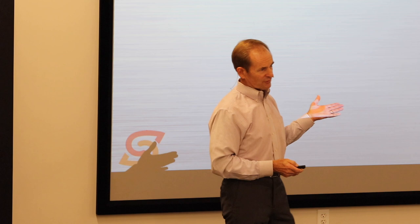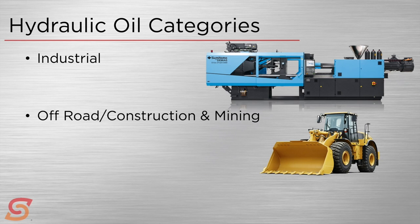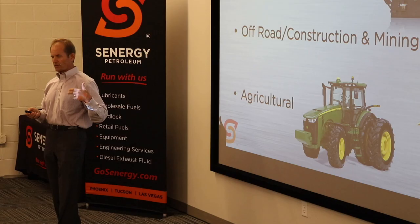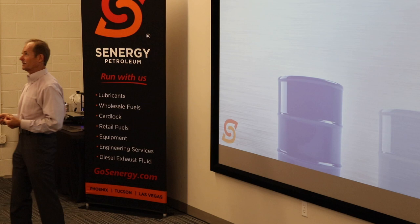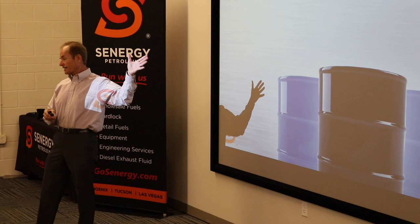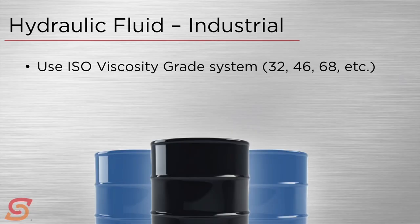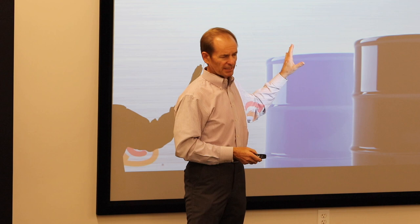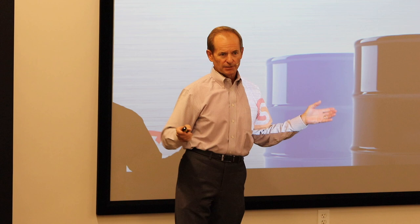There are several ways to categorize hydraulic oils. I chose a system dividing them into three groups: industrial type hydraulic oils, off-road or mining type hydraulic oils used in yellow metal, and agricultural related ag hydraulic oils. Looking at industrial hydraulic oils first — these are graded by the ISO viscosity grade system, where 32, 46, and 68 are by far the most common grades. This ISO system is pretty widely used worldwide.